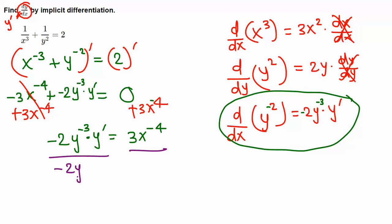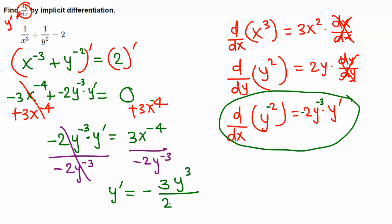Finally, divide both sides by negative 2y to the negative 3 to isolate y prime. Simplifying the negative exponents: x to the negative 4 moves to the bottom as x to the fourth, and y to the negative 3 moves to the top as y cubed. The two negatives cancel to give a positive. So y prime, which is dy/dx, equals 3y cubed divided by 2x to the fourth.